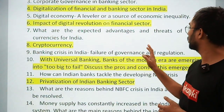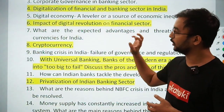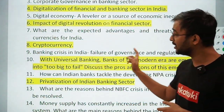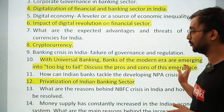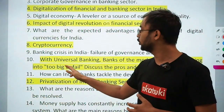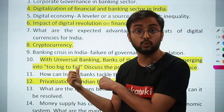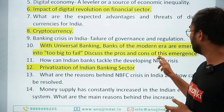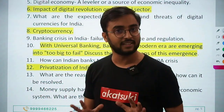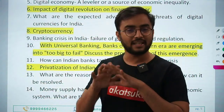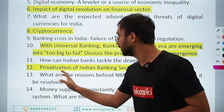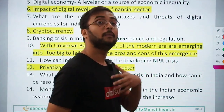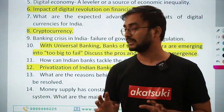Banking crisis in India: failure of governance and regulation — an issue related to banking and finance. With universal banking, banks of the modern era are emerging as 'too big to fail' — discuss pros and cons of this emergence. Banks like SBI are too big to fail, and various articles on this issue appear in Indian Express and The Hindu. How can Indian banks tackle the developing NPA crisis? This has been a debate for the last 4-5 years.